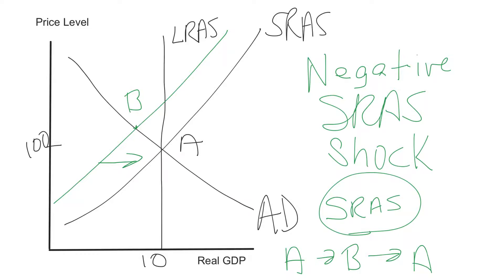With all three cases — positive aggregate demand shock, negative aggregate demand shock, or negative short-run aggregate supply shock — we always see the correction coming from the short-run aggregate supply curve. It adjusts because of the realization of what's happening with the actual price level versus what was expected. That wraps up the static model. Let's move on to the dynamic model.